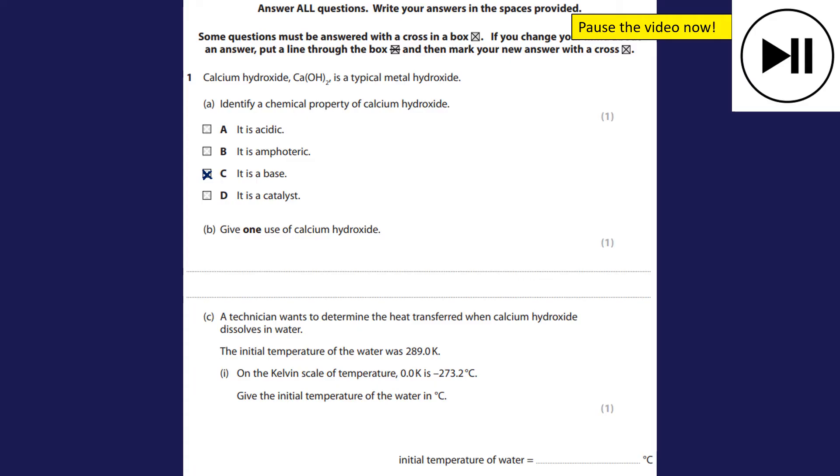A technician wants to determine the heat transferred when calcium hydroxide dissolves in water. The initial temperature was 289 Kelvin. Give the temperature in degrees. You may remember that what we need to do is minus 273, in which case you're going to get an answer here of 16 degrees. They do tell you in the question though that it's 273.2, so strictly speaking we should be taking away 273.2, so the actual answer is 15.8. However, if you did write 16 they will give you the mark.